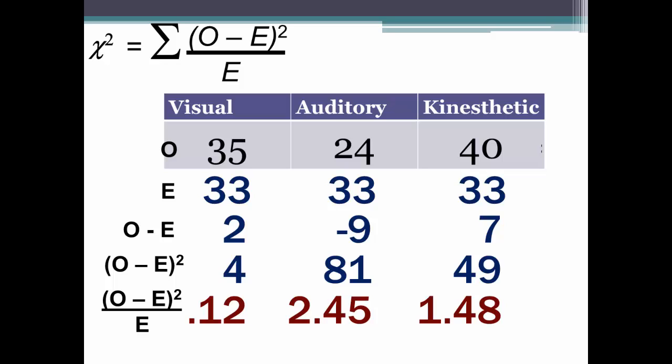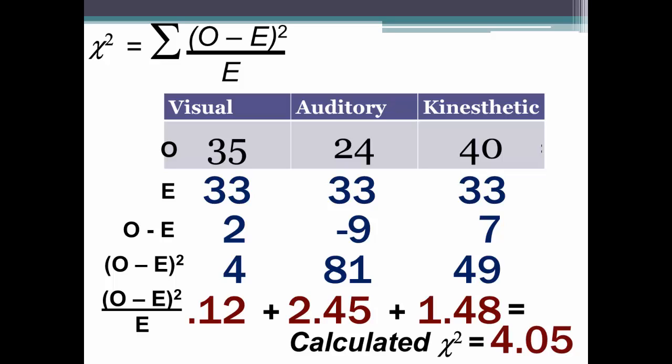One last step to calculate chi-square is to add this bottom row of numbers together: 0.12 plus 2.45 plus 1.48 equals 4.05. So 4.05 is the calculated chi-square.